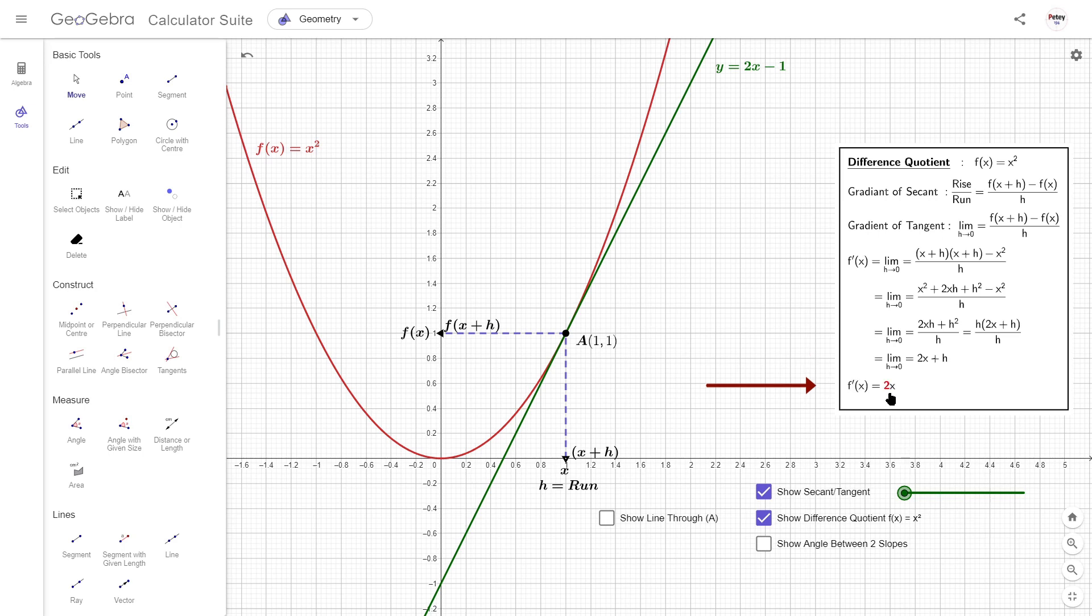What we're left with is a function that allows us to find the slope of the curve at any point. So, for any x-coordinate input, one in the case of point A, we'll get an output for our gradient twice that of our input, 2 in this case.